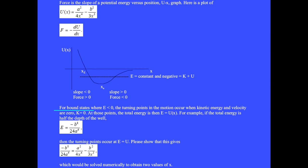For bound states where E is less than zero, the turning points in the motion occur when kinetic energy and velocity are zero, K equals zero. At these points, the total energy is then E equals U(x). For example, if the total energy is half the depth of the well,